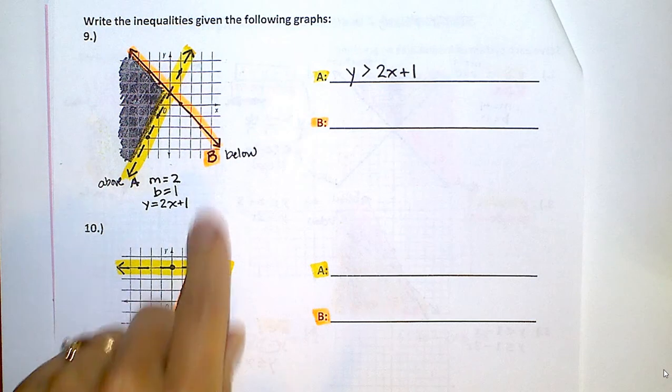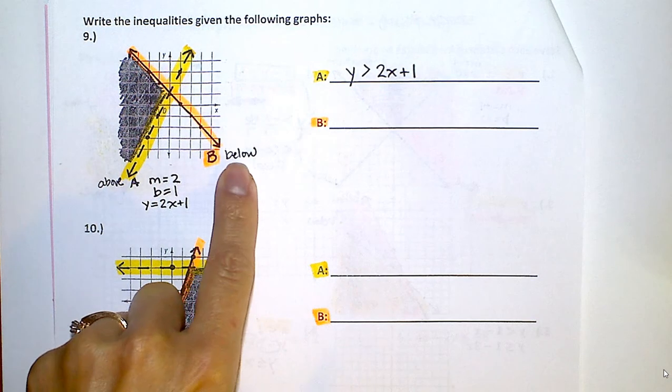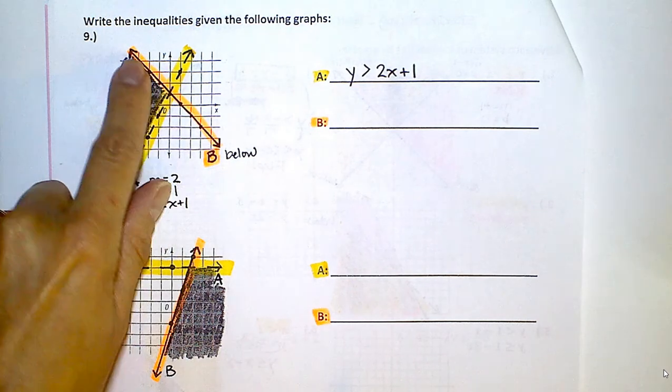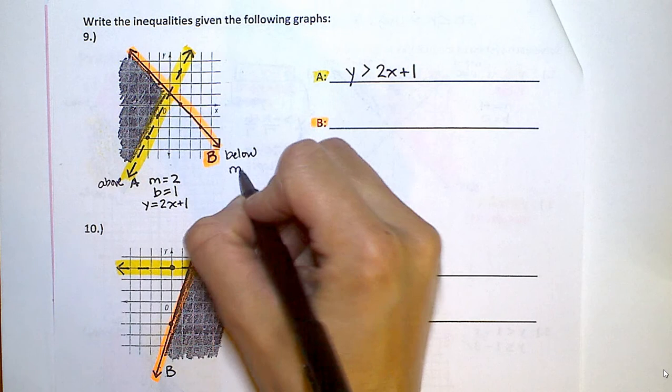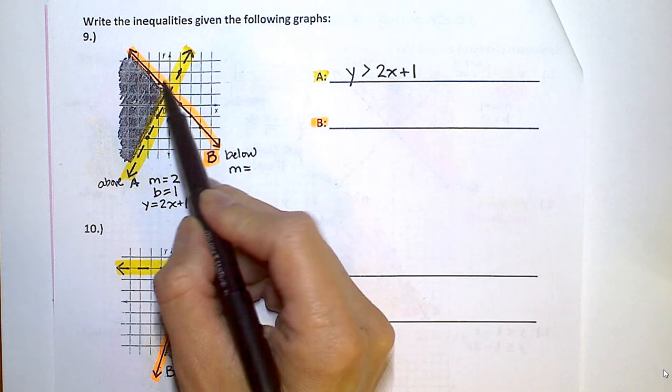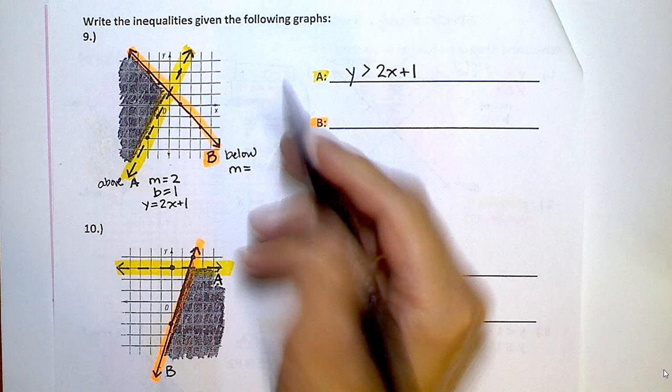Now for B, I know I'm going to shade below. So it's going to be less than and it's going to be equal to because it's solid. But I need to find the slope. So the slope of B is going to be down 1 over 1, down 1 over 1, negative 1.